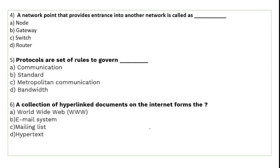A network point that provides entrance into another network is called a gateway. A gateway is like a door that connects with another network and provides an entrance. Gateway joins dissimilar networks — for example, your local network and an external network, such as LAN and WAN.